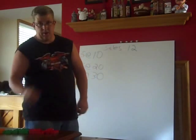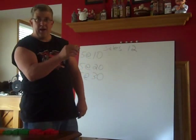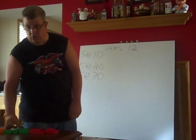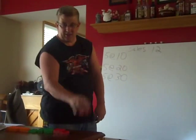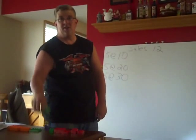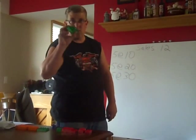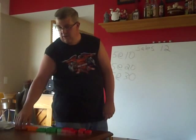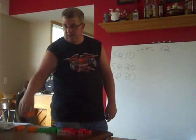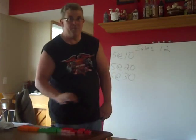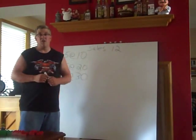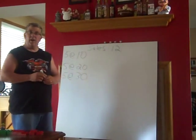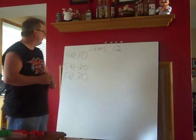We're going to keep Lego guy doing inventory, and we're going to keep our same five red blocks at $10 apiece, five green blocks at $20 apiece, and five orange blocks at $30 apiece. We want to calculate our cost of goods sold and our ending inventory for each.